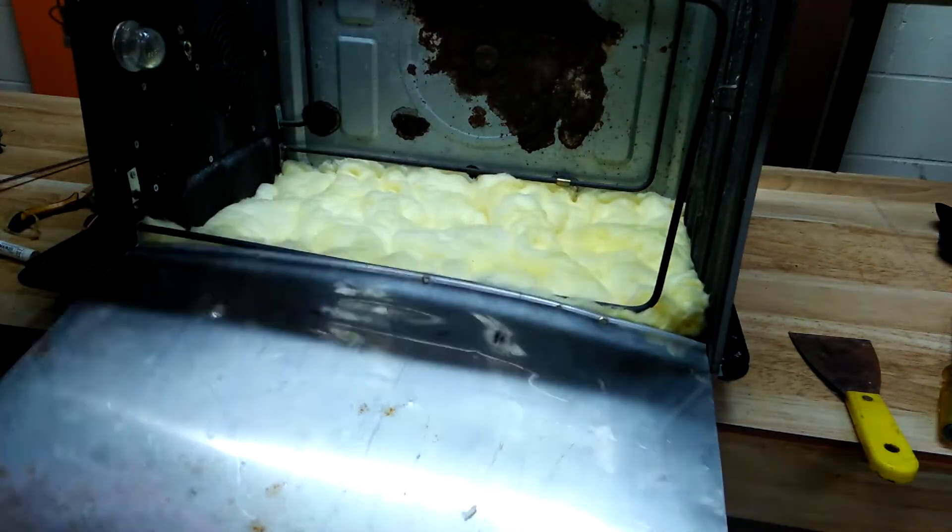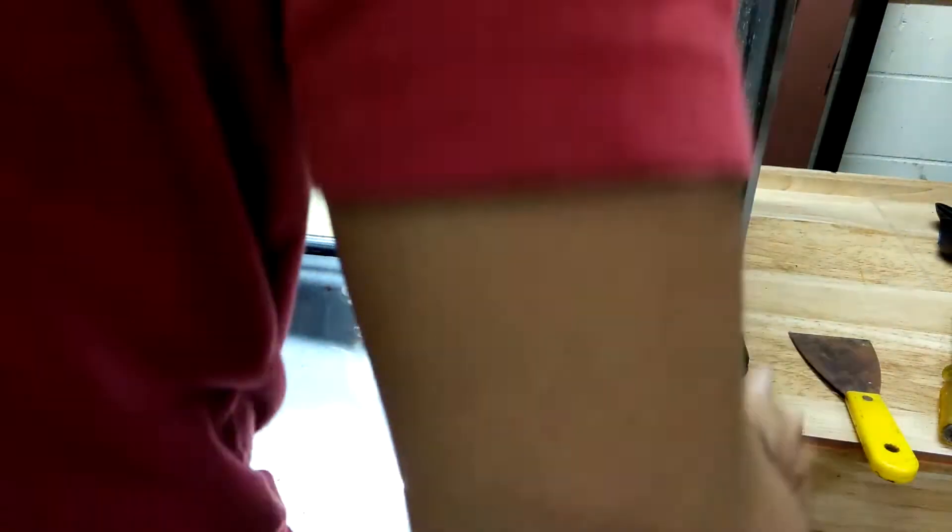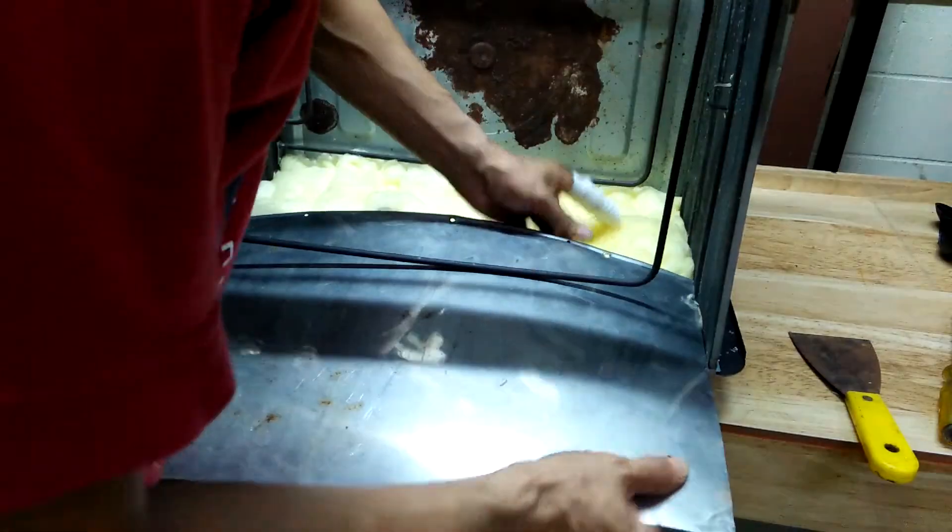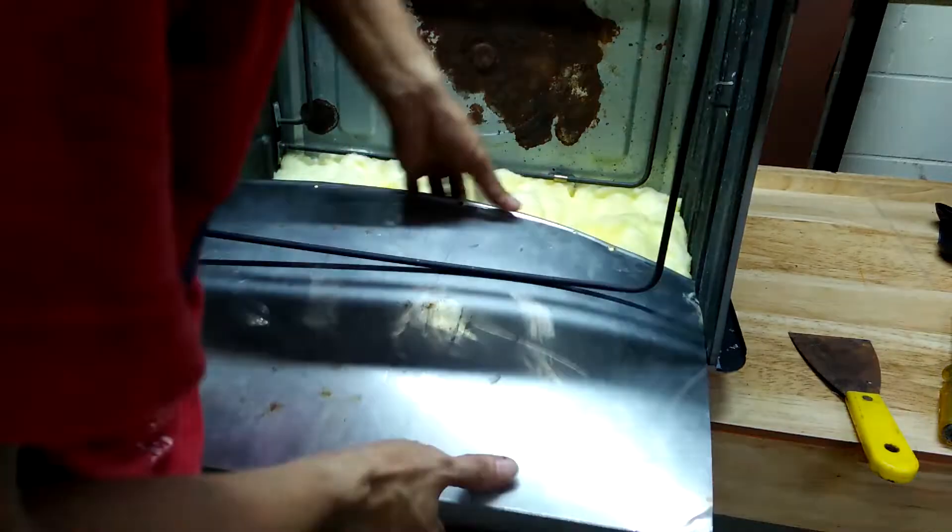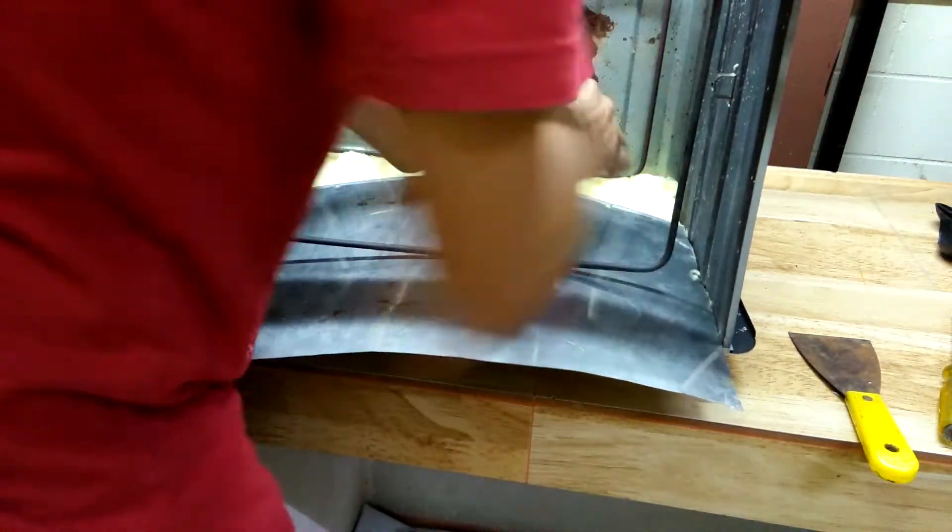For the back wall, I have this sheet metal cut to size. I simply slip it in with the fiberglass insulation sandwiched in between. There are grooves inside that hold this sheet metal in place, so it did not require other fasteners.